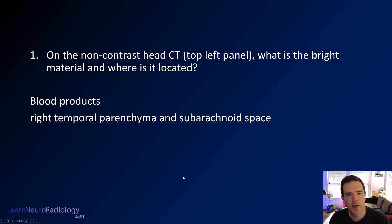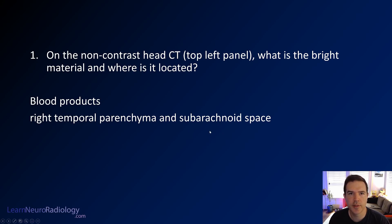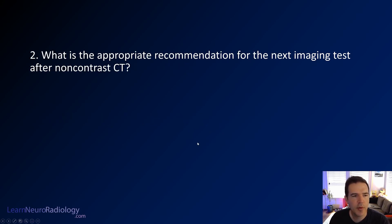So the answer to the first question—on the non-contrast CT, what was that bright material and where was it located—is blood products. They're in the right temporal parenchyma and throughout the subarachnoid space within the brain.